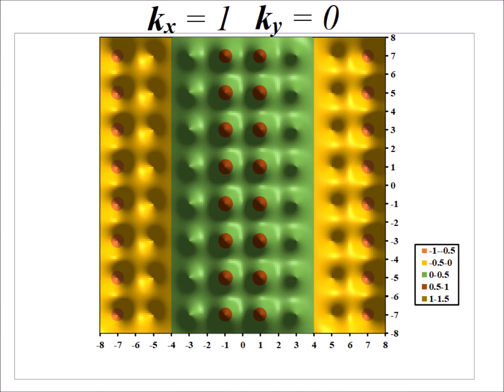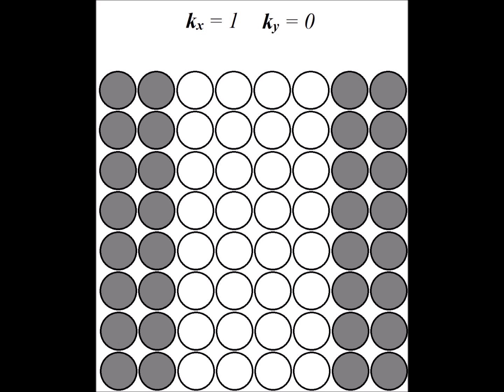Here we have kx equal to 1 and ky equal to 0, and we can see the different phases in the overall pattern. The green regions are in the positive phase and the yellow are in the negative phase, so we have a number of both bonding and antibonding interactions. If you look along a horizontal row, you'll see the pattern corresponds exactly to the situation we had with a linear array in one dimension of eight atoms from the previous video. We can therefore adapt the information from the one-dimensional case to the two-dimensional case very quickly.